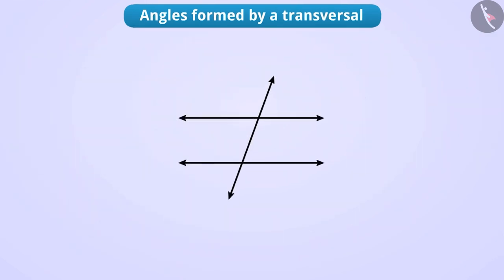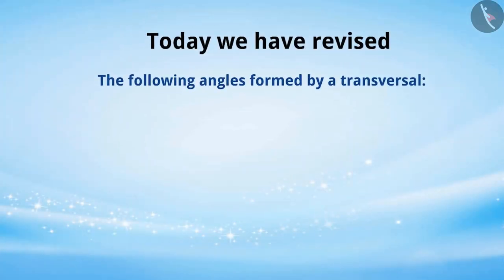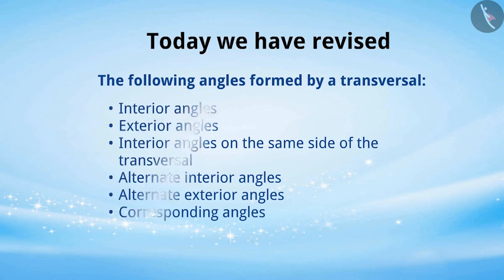Now, look here. There are two parallel lines L and M and the transversal P is forming the shaded angles. There will be an interesting relation between some angles, which we will understand in our next video. Today, we have revised all the angles formed by a transversal. In the next video, we will discuss the angles formed by the transversal of two parallel lines. Thank you.